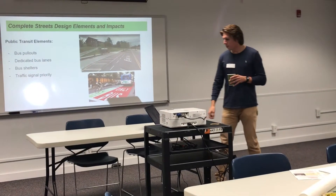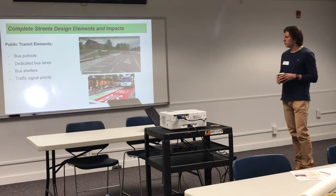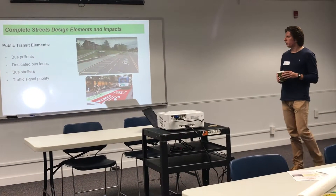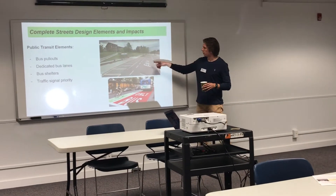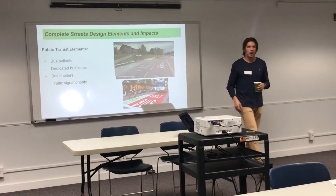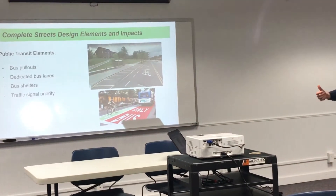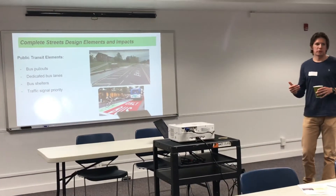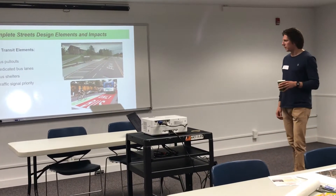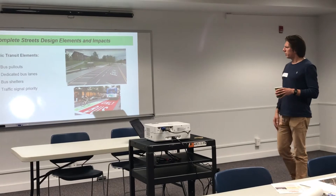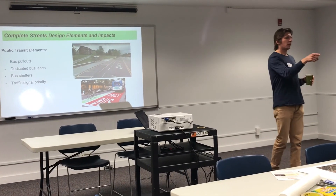Lastly, public transit elements include bus pullouts, dedicated bus lanes, bus shelters, and traffic signal priority. This photo from Cornell's campus shows a bus pullout so the bus doesn't block a lane of traffic. Currently on Monroe Avenue there is a bus route, and when the bus stops it presents hazards to both the bus and traffic. These are just the different elements of Complete Streets to give an idea of what is possible along the road.